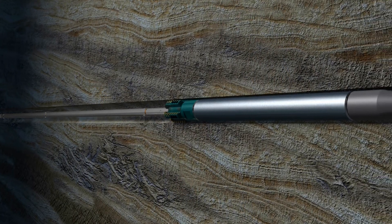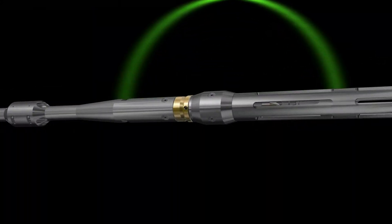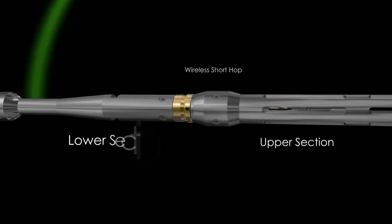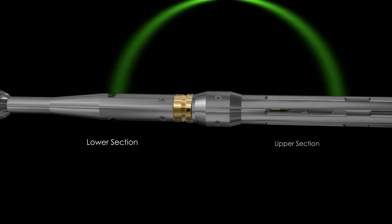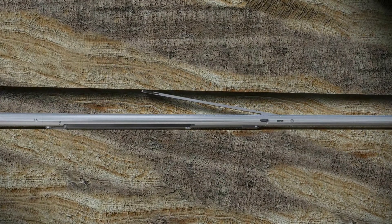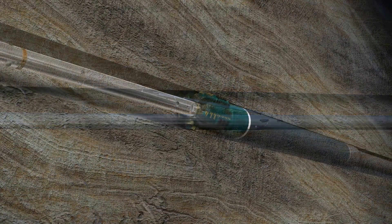Communication with the logging string is maintained through the wireline via a wireless short hop between the upper section and the lower section of the Intelligent Deployment Interface Tool or IDI. This ensures tool functionality and proper tool placement within the BHA before deployment.